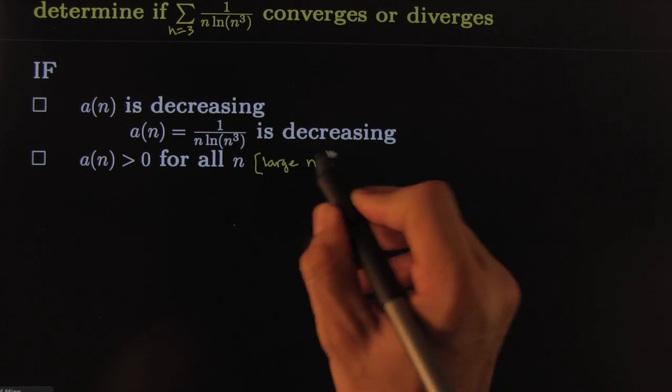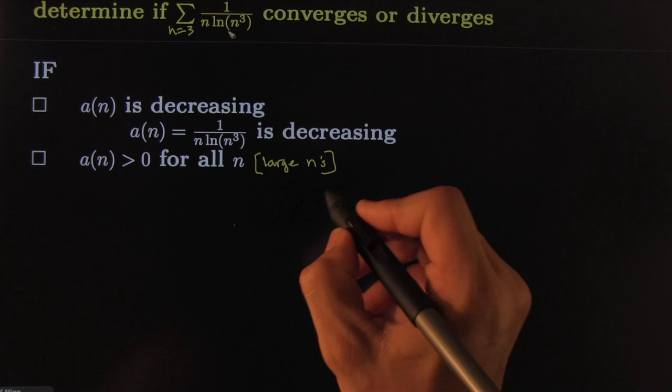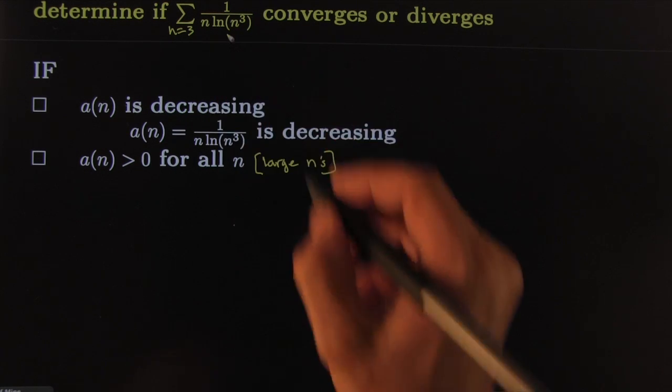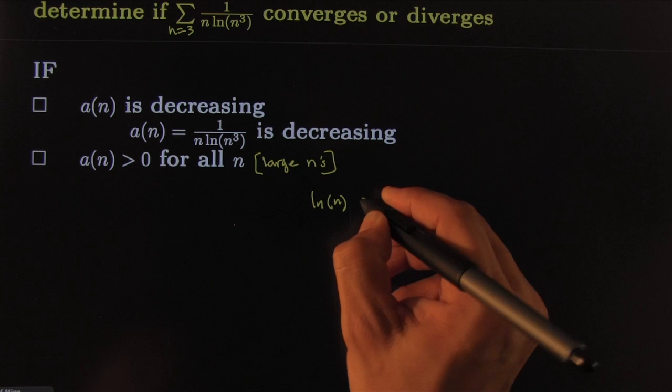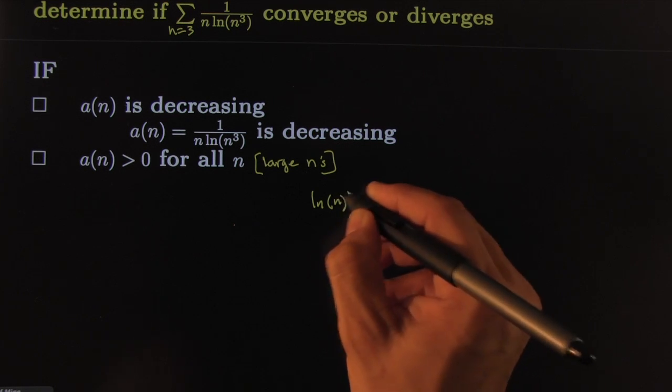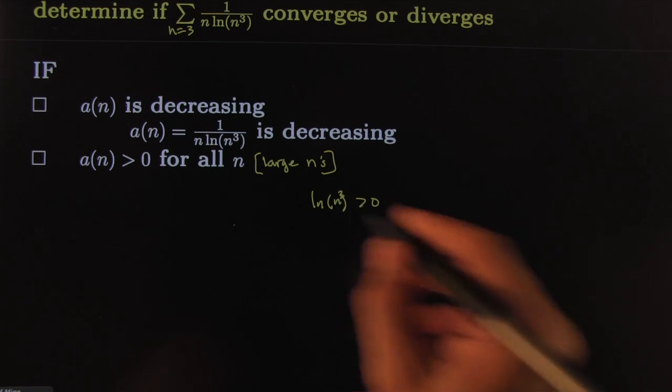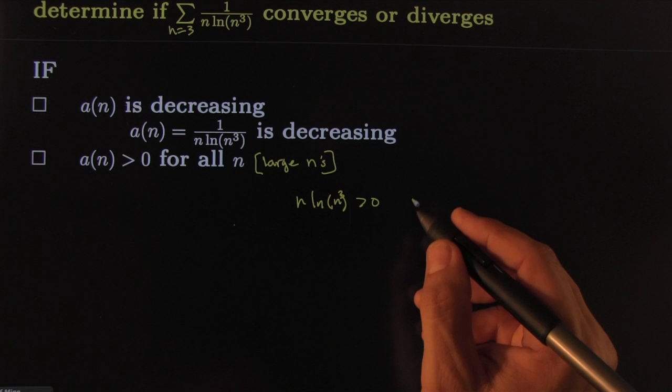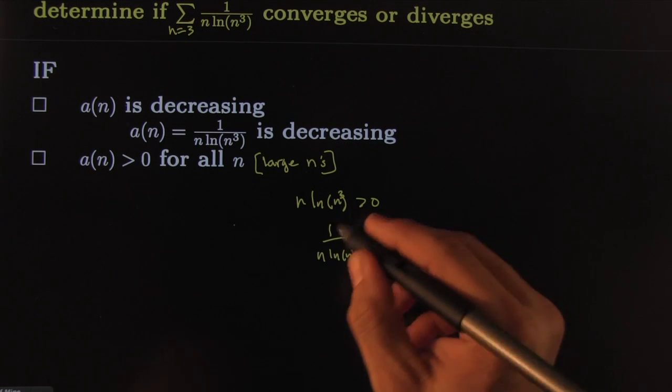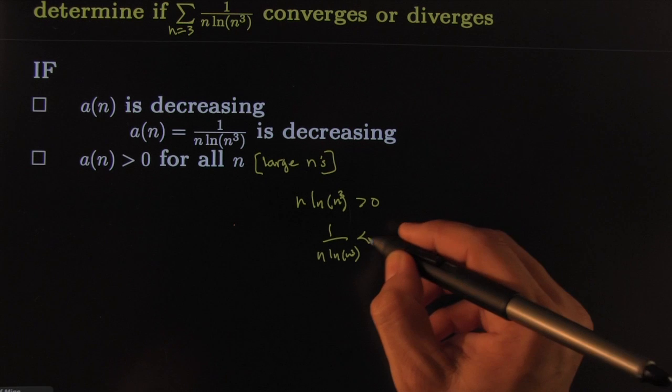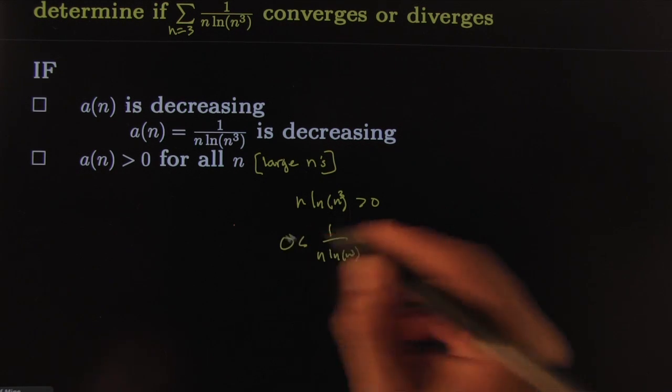You can assume the n's are large anyways. For a large n, of course for sufficiently large n, ln(n) will be of course bigger than zero, and taking it to the third power won't change that, and multiplying by n will be bigger than zero. Of course one over n ln(n³), if this number is bigger than zero, its reciprocal will also be bigger than zero.